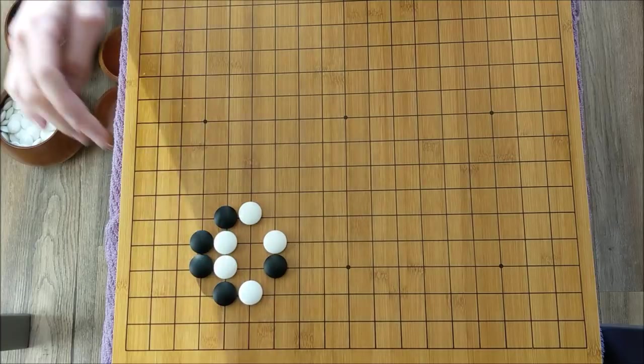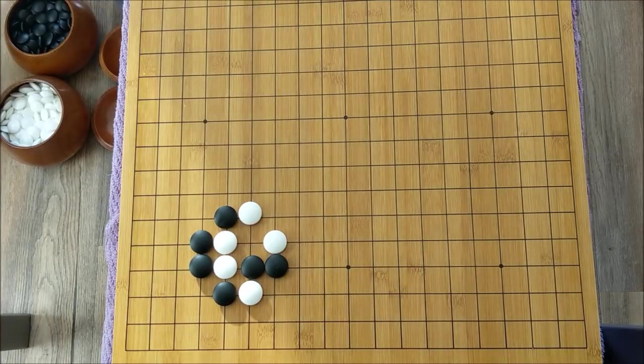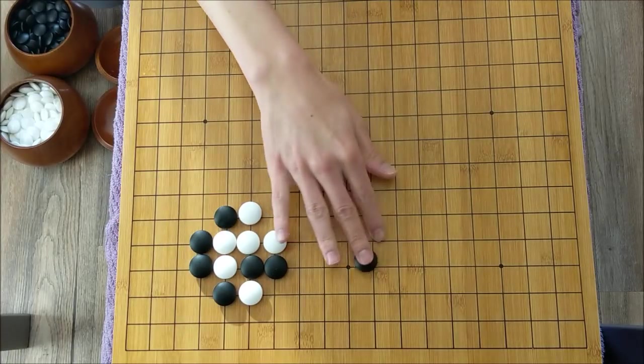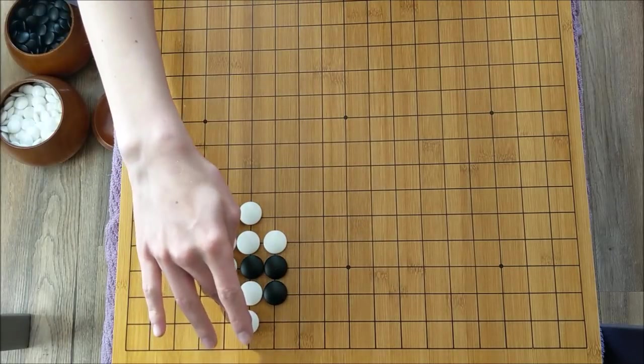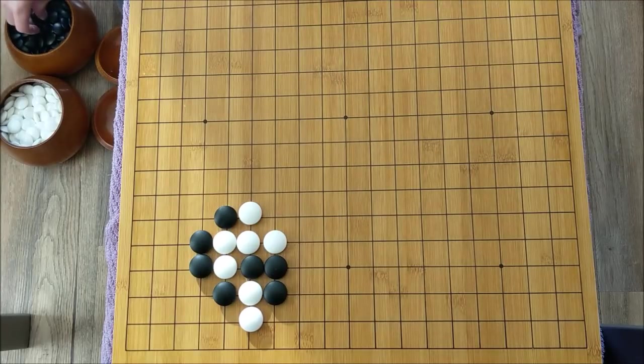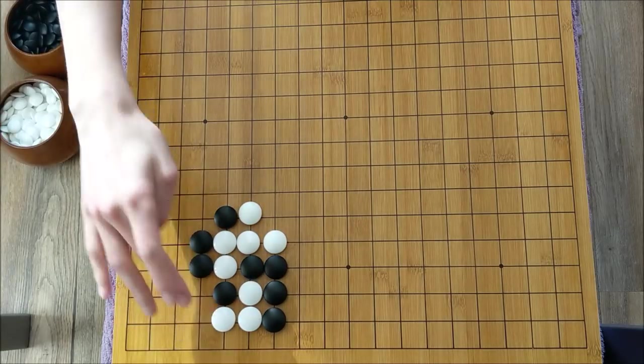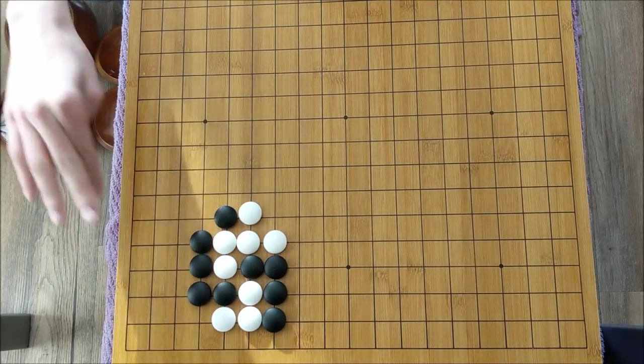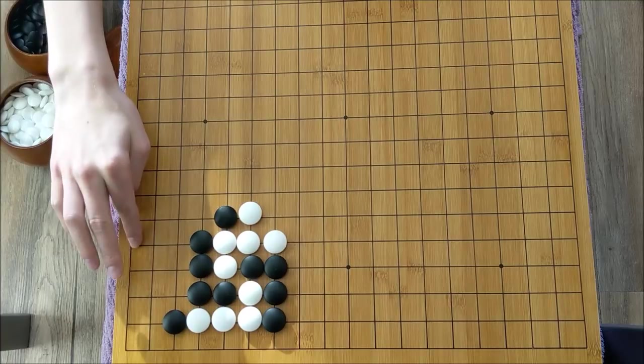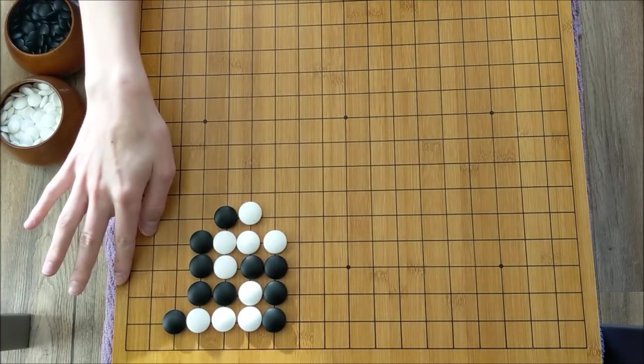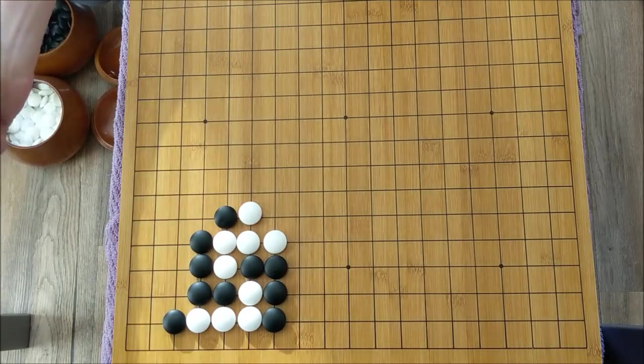And the best part is white does not have any good responses here. If white tries to be a little bit more aggressive, well, this is just an atari on these two stones, which white has to defend. Now black can extend downwards here. And after another defense, there is no hope for white stones. Black simply has too many liberties. Black is too strong. This is open to the area. This is open to a standard corner. This still doesn't have any eyes yet. And white's position has completely crumbled.